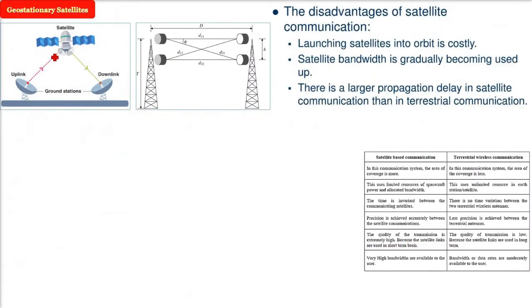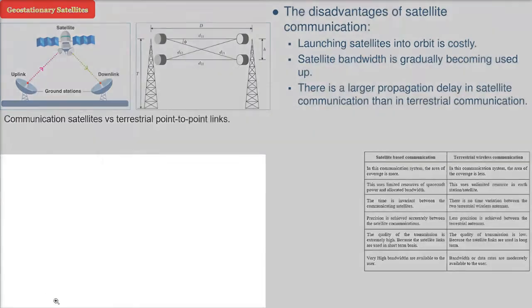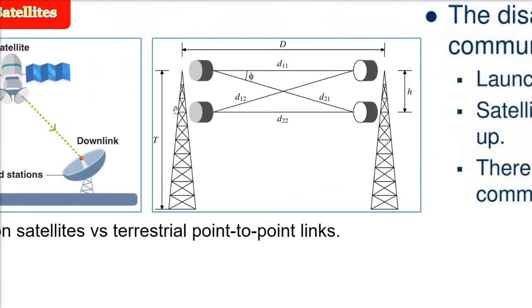In this topic we discuss geostationary satellites and communication satellites, and the difference between communication satellites and terrestrial point-to-point links. These are antennas operating as line-of-sight point-to-point links, so there are certain differences — advantages and disadvantages to consider.